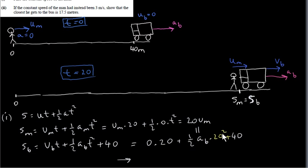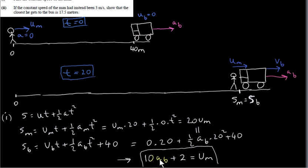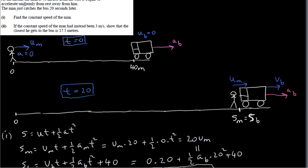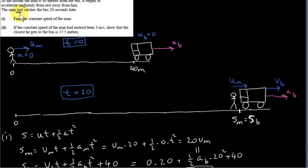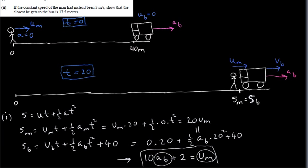With 20² = 400, divided by 2 gives 200, so: 200 A_B + 40 = 20 U_M. Dividing everything by 20 gives the relation 10 A_B + 2 = U_M. This shows there are infinitely many solutions — any values of A_B and U_M satisfying this equation allow the man to catch the bus. However, the condition that the man just catches the bus adds further restrictions.